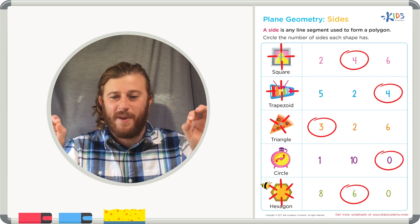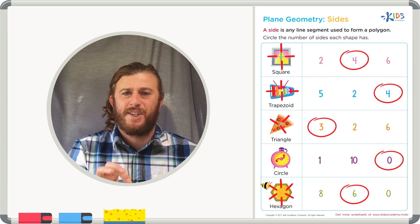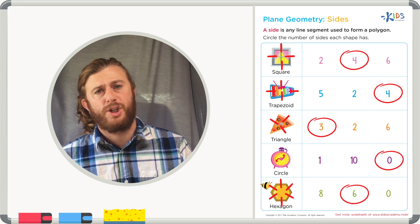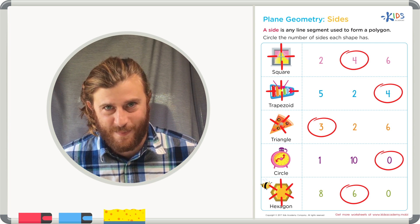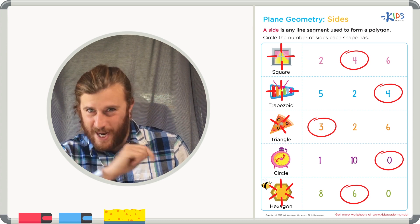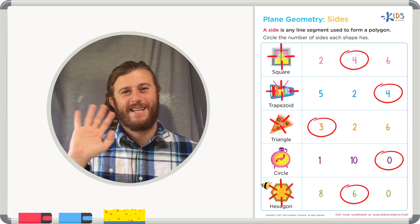Remember, boys and girls, a side is a line segment that connects to another line segment to form a closed shape we call a polygon. Thanks for watching, boys and girls. Remember to count your sides carefully. See you next time.